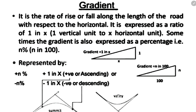The next thing is gradient. The gradient is expressed as a ratio, for example 1 in x, where 1 is the vertical and x is the horizontal. It can also be expressed as n in 100.